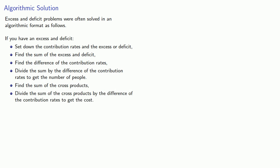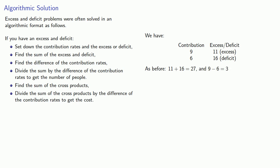Applying that to the problem at hand: we have contribution rates of nine and six, giving an excess of eleven or a deficit of sixteen. As before, we add the excess and deficit — eleven plus sixteen gives twenty-seven. We find the difference in the contribution rates — nine minus six equals three. And so, as before, twenty-seven divided by three is nine, the number of persons.